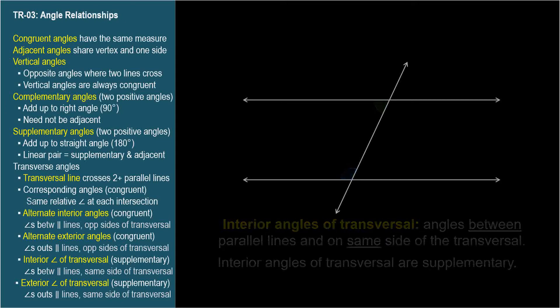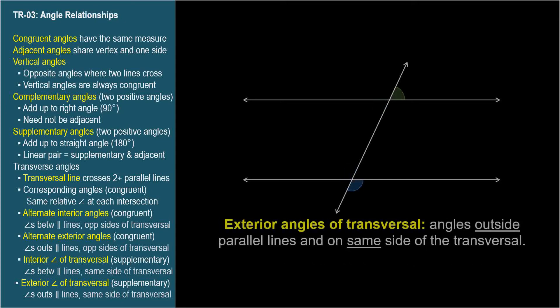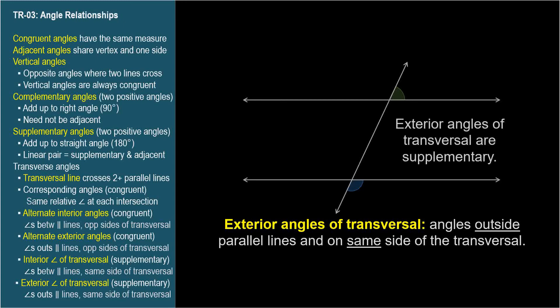Exterior angles of a transversal are the pairs of angles on the outside of the parallel lines and on the same side of the transversal. Exterior angles of a transversal are supplementary.